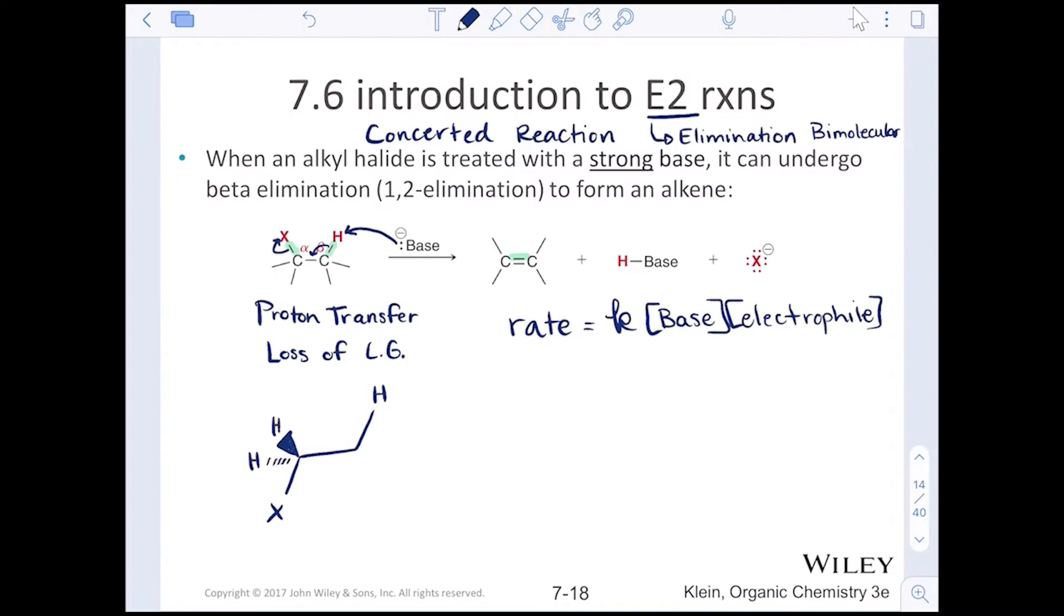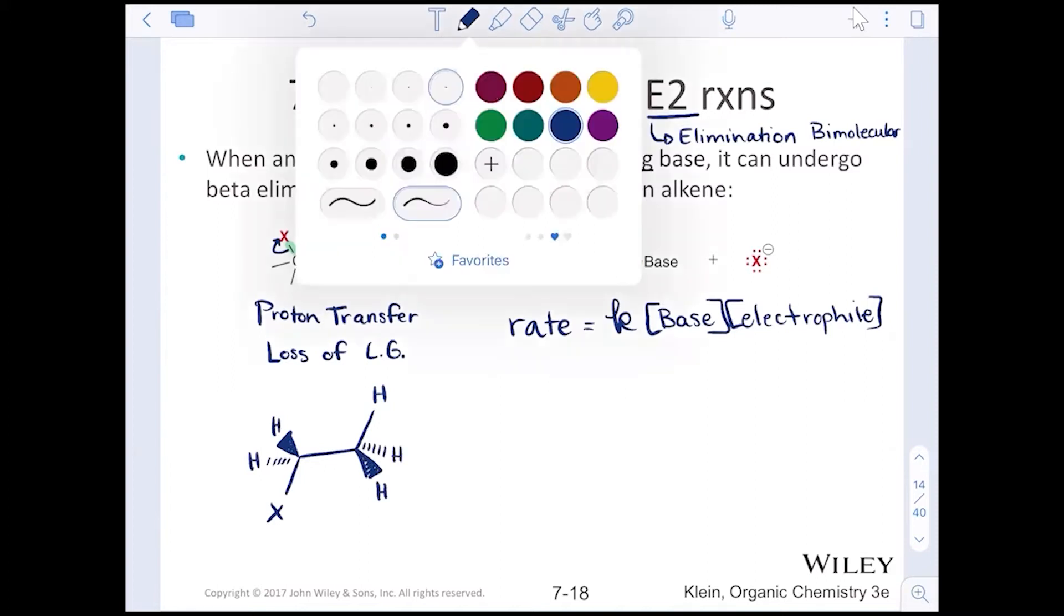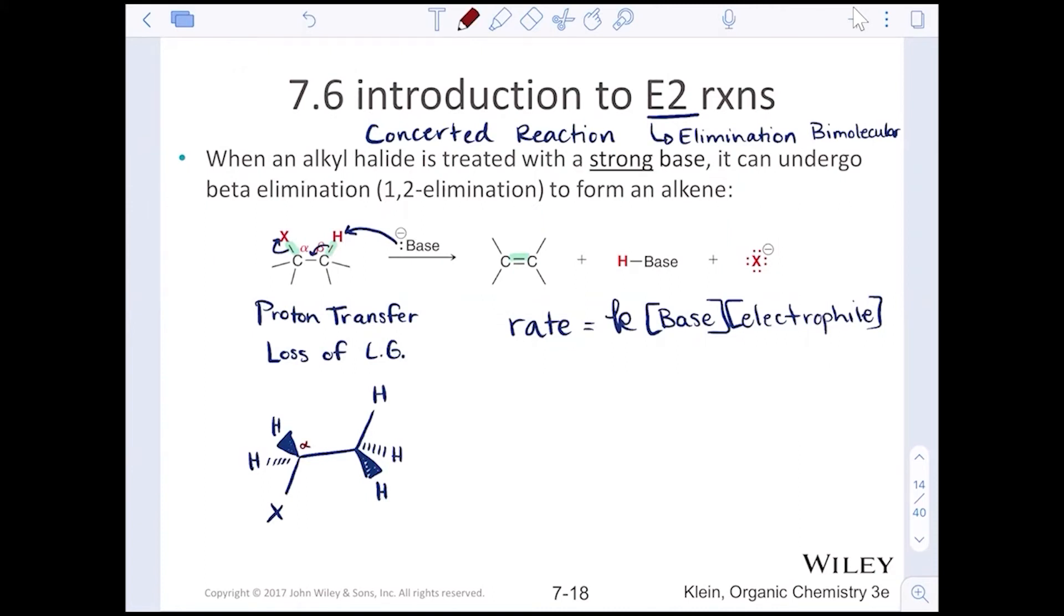I'll put in the hydrogens so that we can start to identify those tetrahedrals on both the alpha, the carbon with the leaving group, and the beta, the carbon with the hydrogen, right next door. And what's really important is that when this base comes in to do that first initial proton transfer, think about the trajectory of where that base is coming in and where the leaving group needs to be.